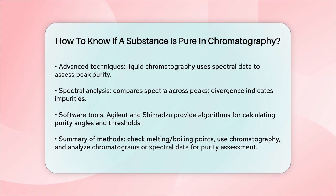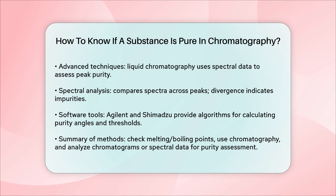So, to sum it up, you can tell if a substance is pure by checking its melting and boiling points, using chromatography to separate its components, and analyzing the resulting chromatogram or spectral data. These methods help ensure that the substance is free from impurities and consists of only one element or compound.